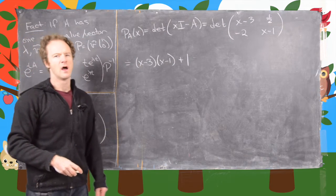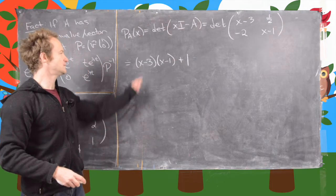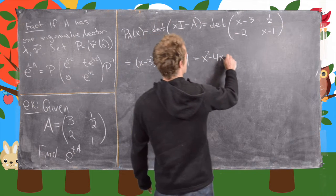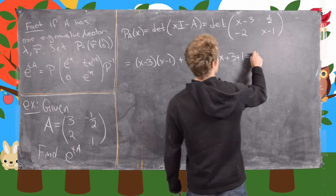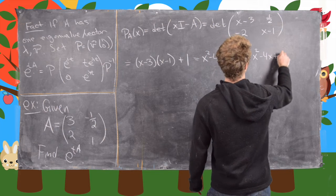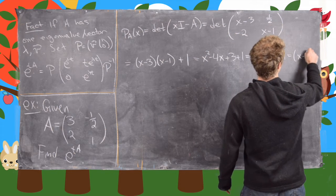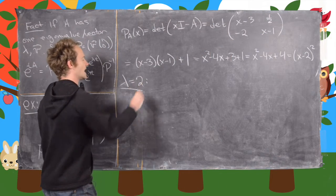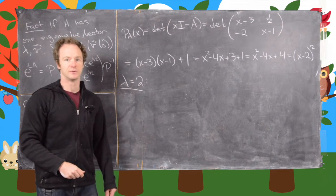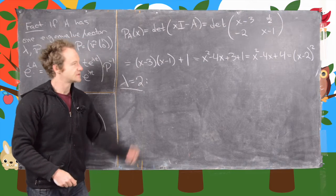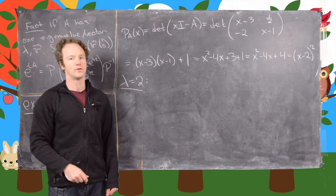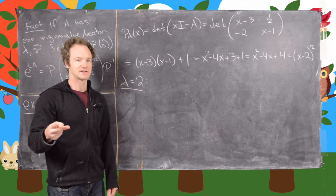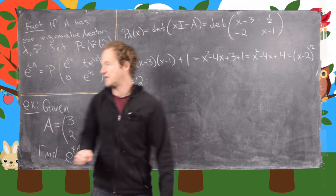Simplifying, we get X squared minus 4X plus 3 plus 1, which gives us X squared minus 4X plus 4. That factors as (X minus 2) squared. So we have a single eigenvalue of lambda equals 2. Now because this is a 2 by 2 matrix, we know there's going to be only one eigenvector — if there were two, this matrix would be diagonalizable to a multiple of the identity, which would mean the original matrix was a multiple of the identity.